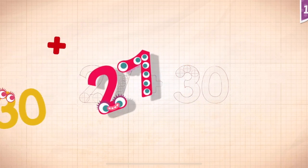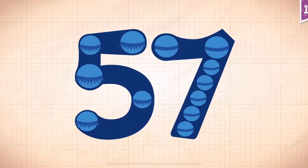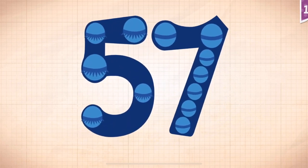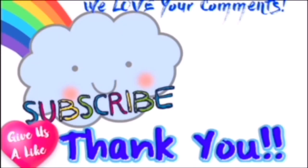27 plus 30 equals 57. Touch the monster's eyes and count.